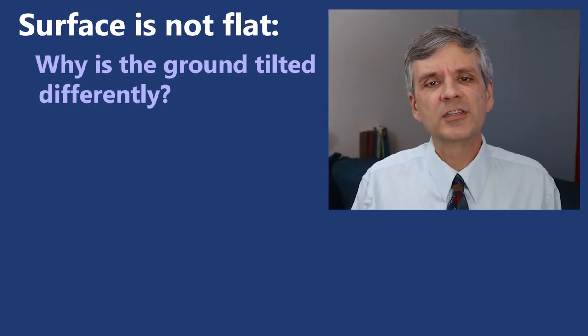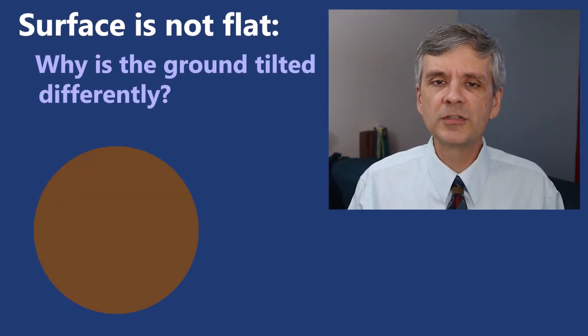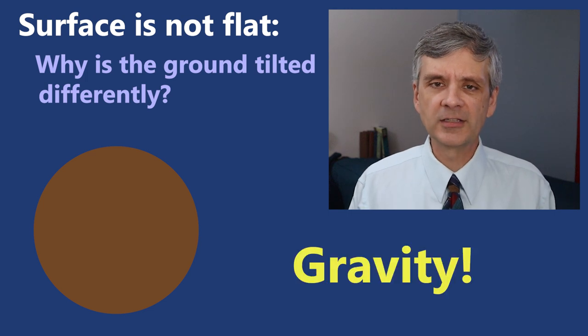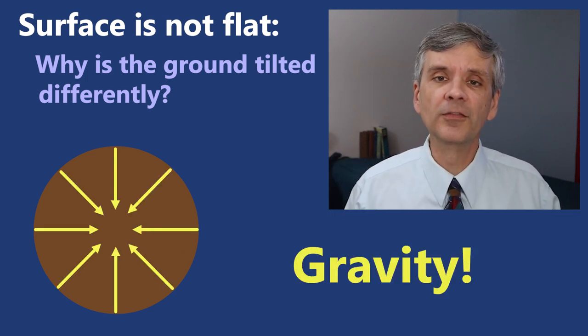If the earth is not flat, the standard answer is to say that the surface of the earth is close to spherical, and gravity causes the direction of down to always be pointing toward the center of the earth.